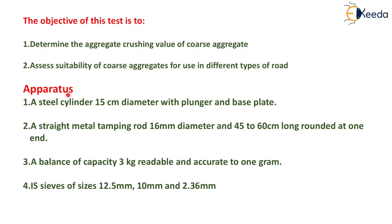The apparatus used in this test are: a steel cylinder 15 cm diameter with plunger and base plate; a straight metal tamping rod 16 mm diameter and 45 to 60 cm long rounded at one end; a balance of capacity 3 kg, readable and accurate to 1 gram; and IS sieves of sizes 12.5 mm, 10 mm, and 2.36 mm.